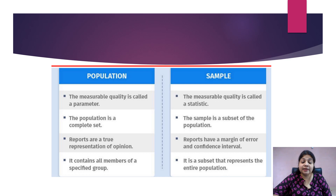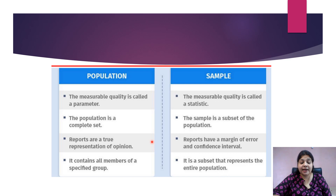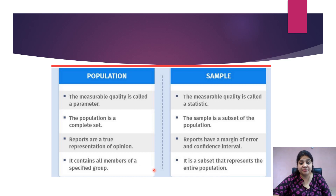Let's summarize the difference between population and sample. Population is the entire complete set, and sample is a subset of the population. The measurable quantity used to measure a population is called a parameter, and the measurable quantity used to measure a sample is called a statistic. Population is the true representation of the data, but a sample may have a margin of error and a confidence interval. Population contains all members of the specified group, while sample contains the subset that represents the entire population.